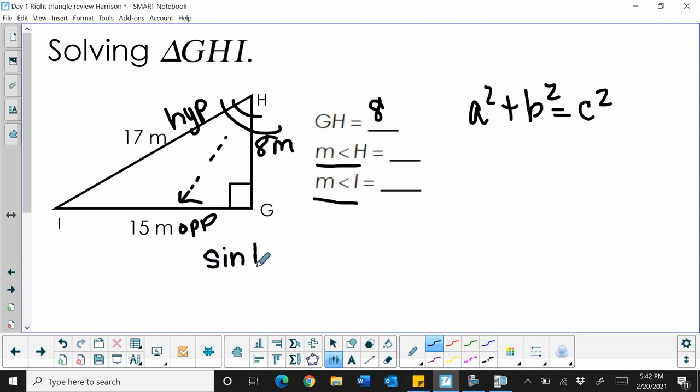So sine of angle H is equal to my opposite over my hypotenuse, which is also 15 over 17. So here is my ratio. I need to work backwards to find the angle. So I'm going to use my calculator to take the inverse of sine of the ratio 15 over 17.